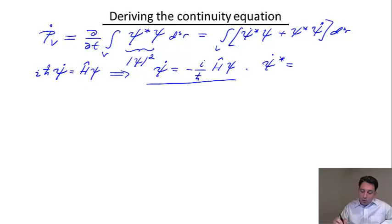So I can also derive the same equation for Ψ* dot. And since the Hamiltonian is sort of real, it has just the kinetic and potential energy, it's going to be plus i over ℏ, H acting on Ψ*.